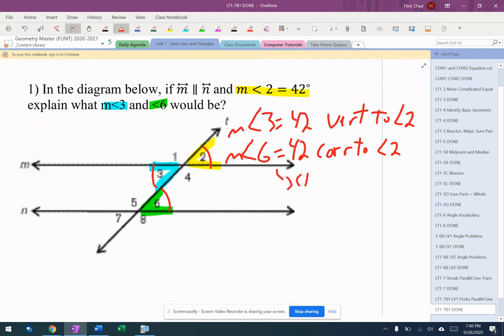So instead, we could have written it's 42 because it's alternate interior to angle 3. That would also work. So that's what we're looking at here. You're not going to have many with numbers. Most are going to have algebra that you have to do, but that's what we're trying to work our way through.